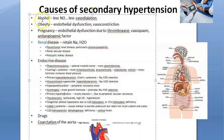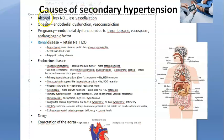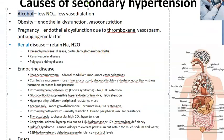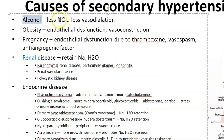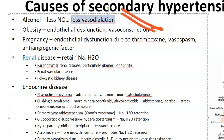Starting with alcohol: why does blood pressure increase in an alcoholic? Because there will be less nitric oxide, so less vasodilation occurs. With less vasodilation, vasoconstriction takes over. If the blood vessels constrict, blood pressure will be more.